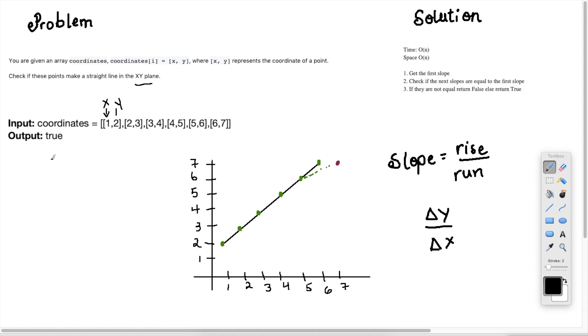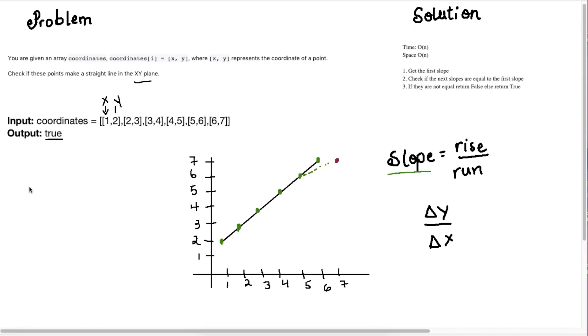Then we need to return true. So our output should be boolean, boolean true. Otherwise, if it doesn't make a straight line, then we need to return false. Okay, let's look at some strategies we can use to solve this problem. Great, so we need to make two observations to solve this problem.